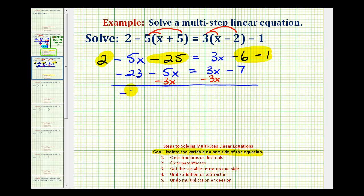So we'd have negative twenty-three and then minus five x minus three x, or negative five x minus three x, that would be negative eight x. So we'll write minus eight x must equal three x minus three x, that's zero. That's why we did that. And then we have negative seven.